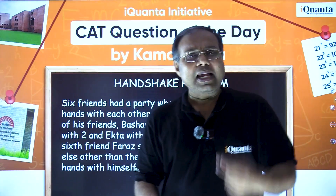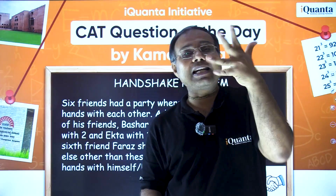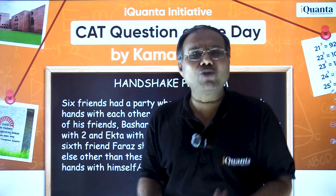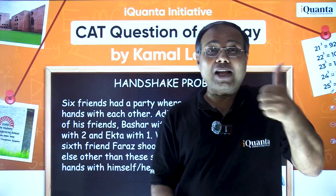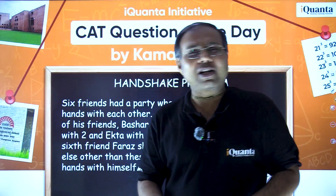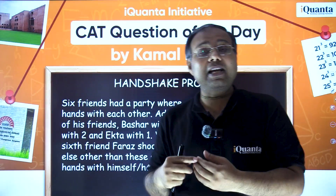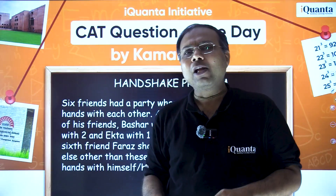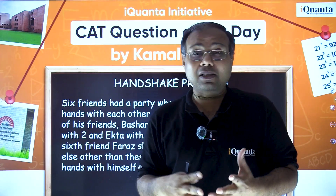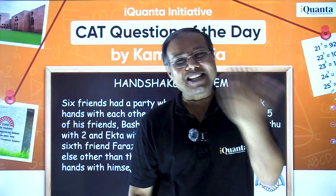So we have six friends A, B, C, D, E, and F. A shook hands with 5, B with 4, C with 3, D with 2, E with 1 — and we need to find F. The obvious pattern in mind is 5, 4, 3, 2, 1, 0, but it's not necessarily zero. The answer isn't random guesswork — a person can have at most 5 handshakes since there are 6 people and you can't shake your own hand. So the answer lies in the range 0 to 5.